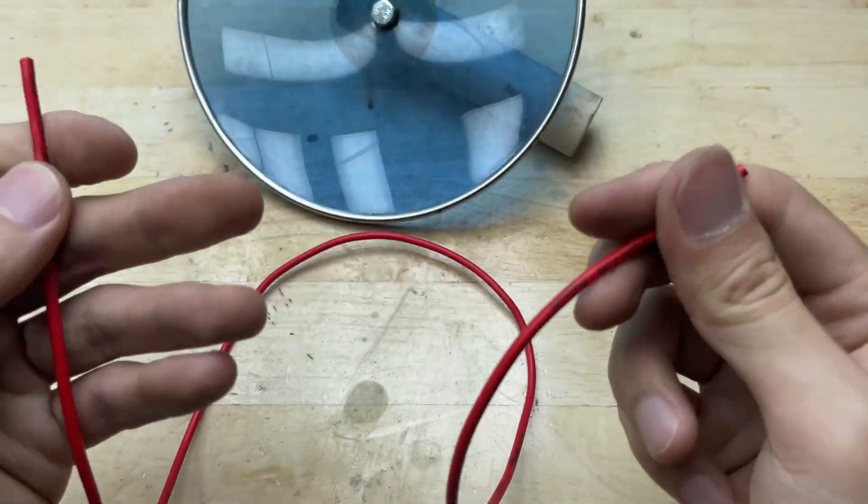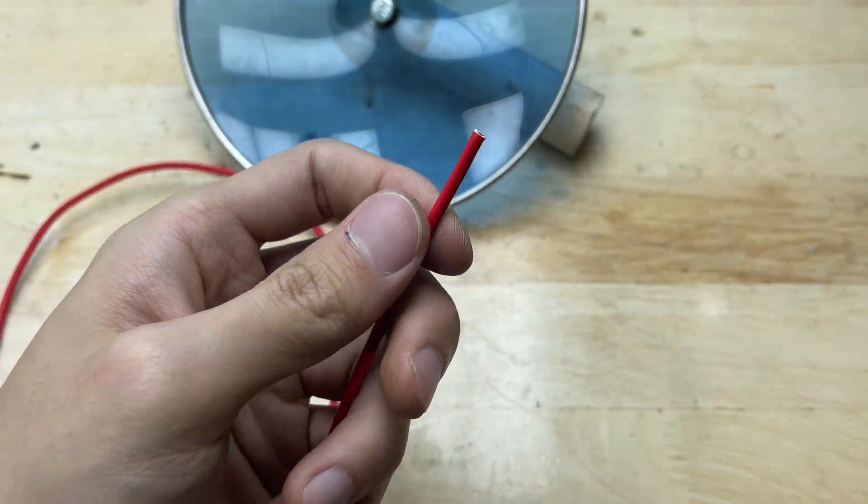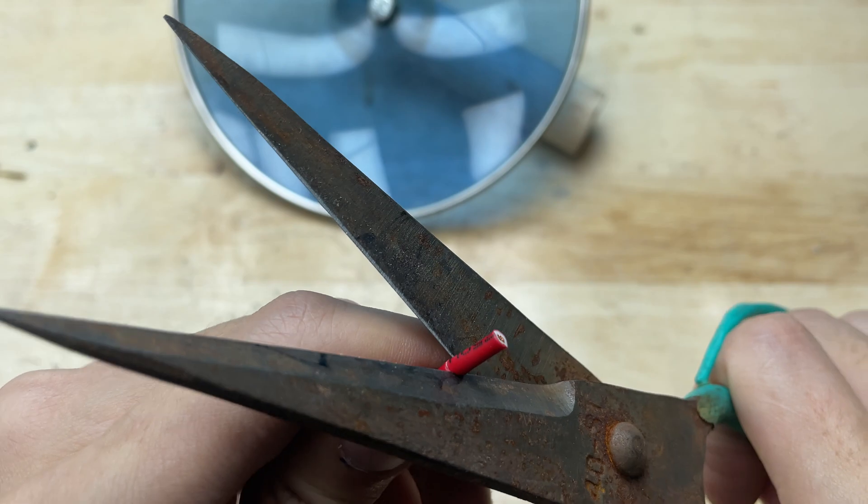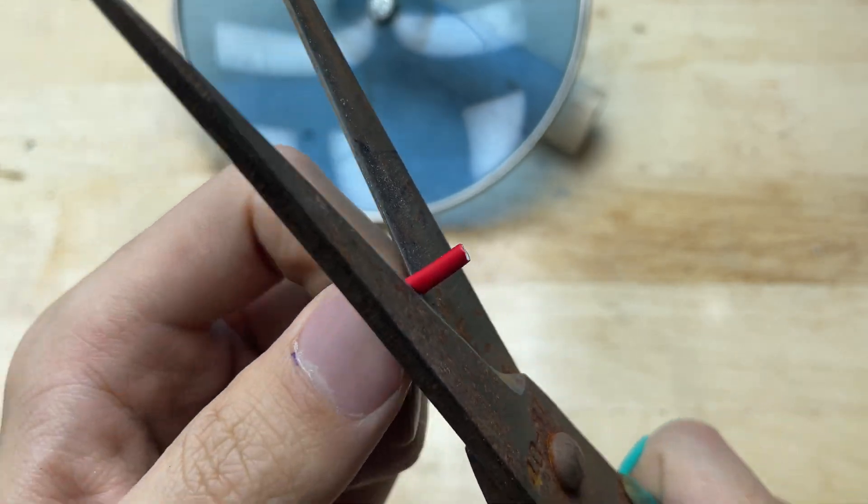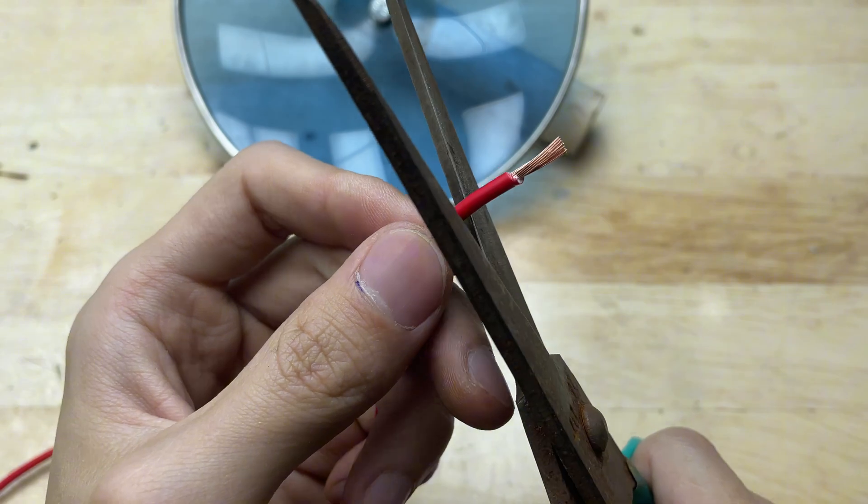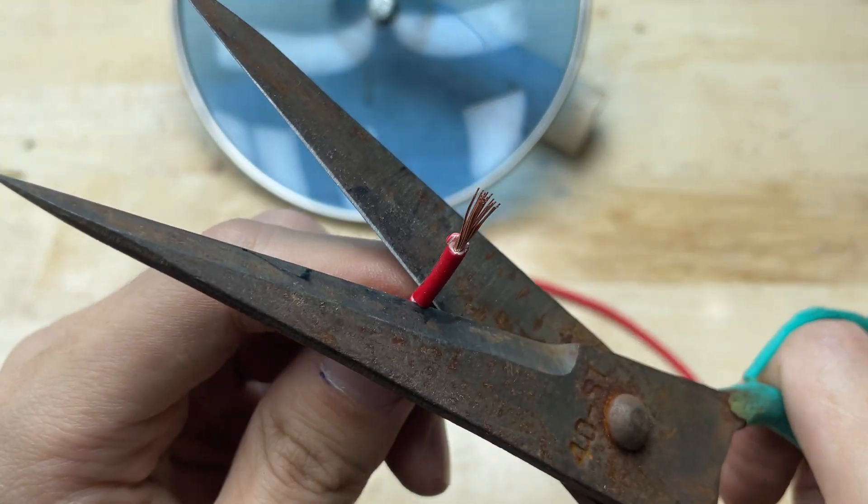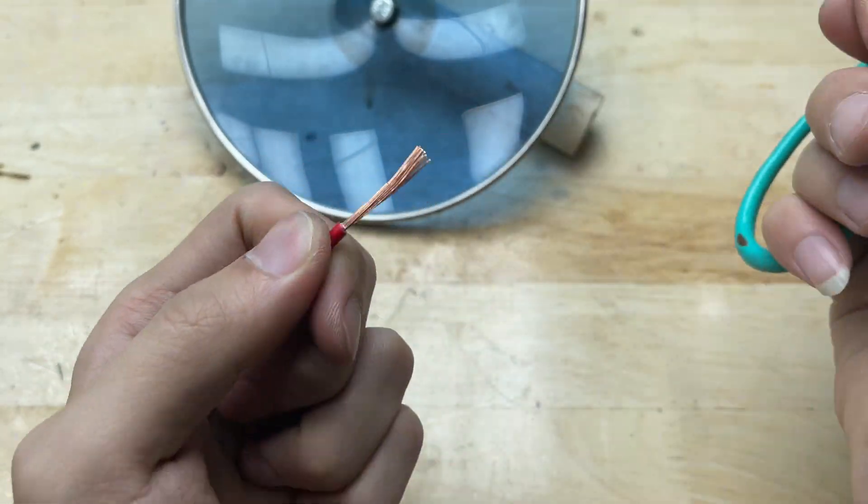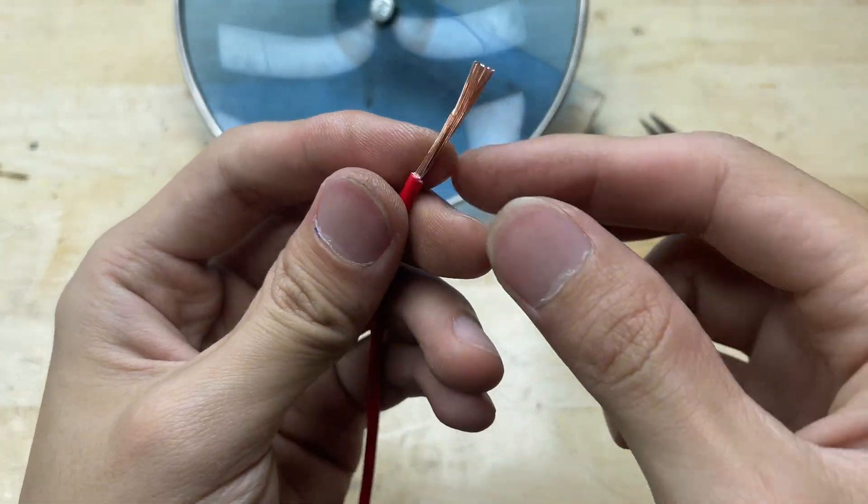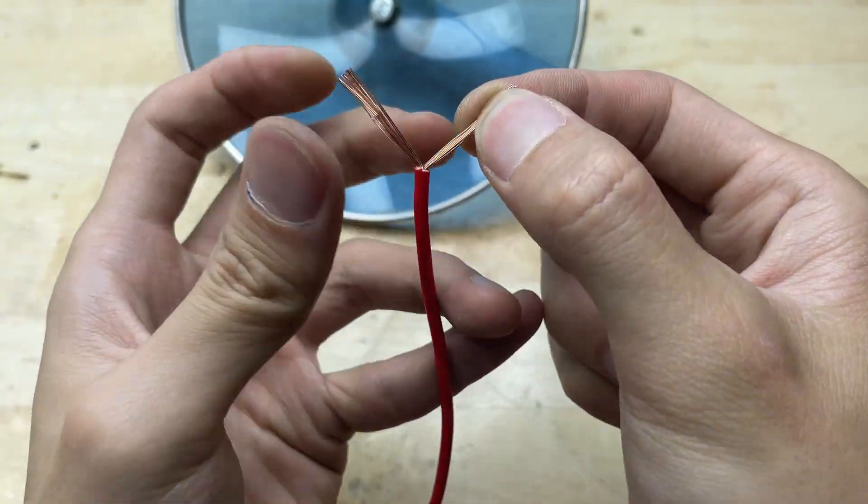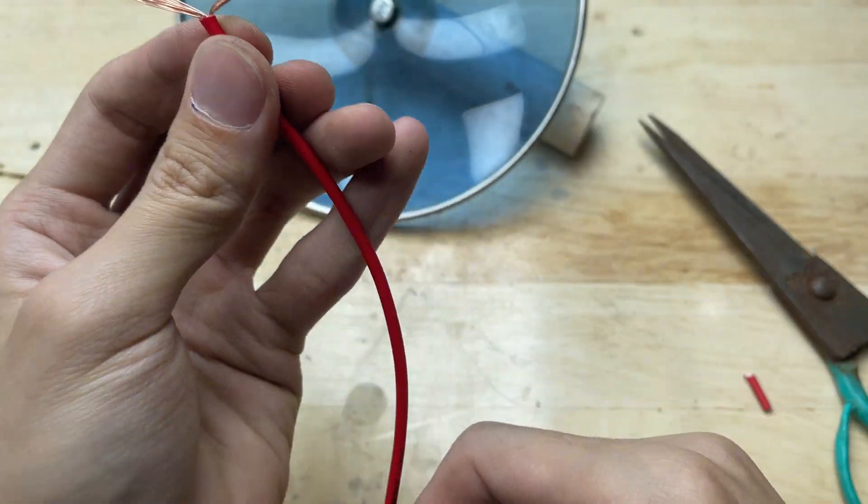All right, now it's time to work on the wires. Strip about one centimeter of insulation off the end of each wire to expose the copper strands. Be careful not to cut the wires themselves.